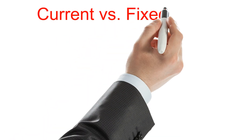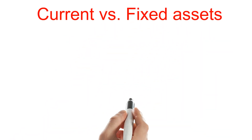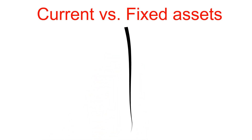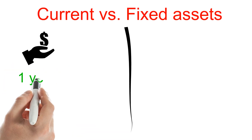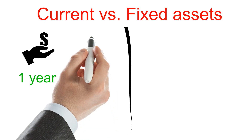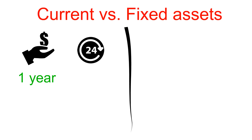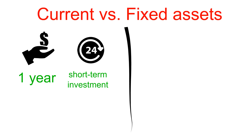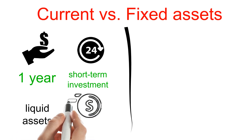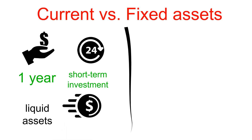Now let's look at current versus fixed assets. Current assets are items of value your business plans to use or convert to cash within one year. Most businesses use current assets in their day-to-day operations. Current assets are also considered short-term investments. Some may also be liquid assets — assets you can quickly turn into cash, like stocks. Types of current assets include cash, accounts receivable, inventory, and prepaid expenses.